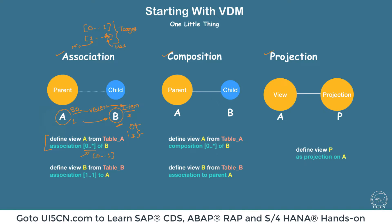The syntax is quite straightforward. In the parent — which is the sales order — we write: define view A from table_A. This table can be either a database table or another CDS view. We then use the keyword 'association' and define the cardinality of B. In the child — which is the item — we write: define view B from table or CDS view, and use the keyword 'association' with cardinality back to A. In both cases the keyword is 'association', which is important to keep in mind so you don't confuse it with composition.